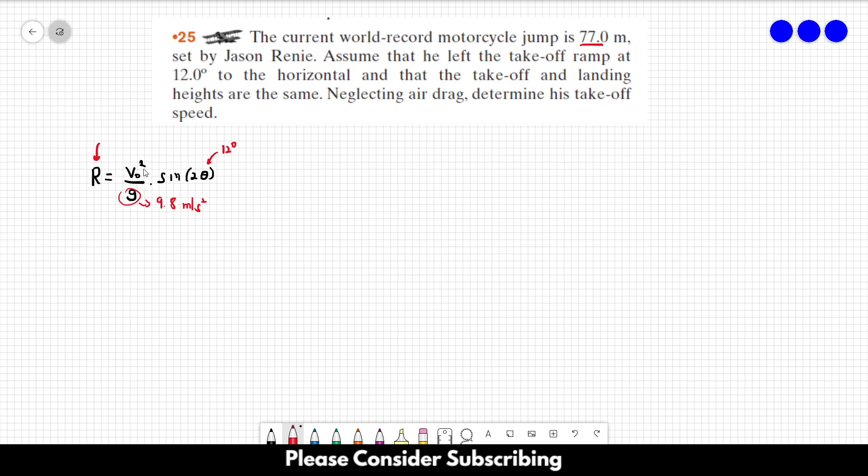So all we have to do is isolate the initial velocity and then we can determine his takeoff speed. So let's isolate v₀. So v₀ is equal to the square root of r times g over the sine of 2 times theta.